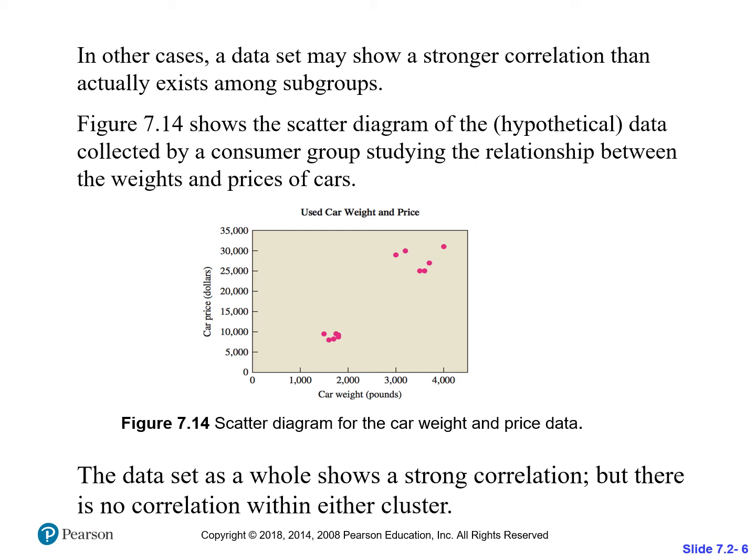The point here is that the data may show a strong correlation overall, but there's not a correlation within each cluster. If you were to take those separately, there wouldn't be a line you could draw. They're just grouped around little tiny pockets.